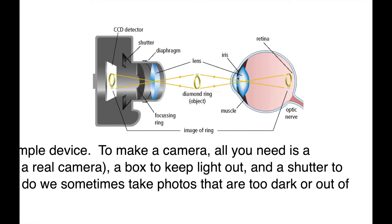Same with the iris in your eye — it's going to change its size to let more or less light in. In a camera there's also a shutter that can be opened and closed to produce the image. The image forms on a sensor called a CCD detector — CCD stands for charged coupled display. In your eye the image is formed on the back of the eye, which is called the retina.